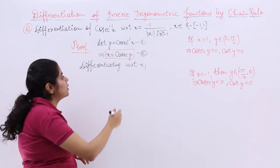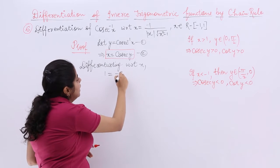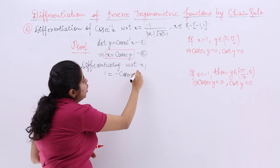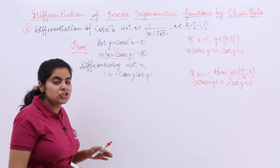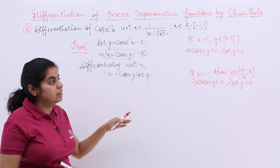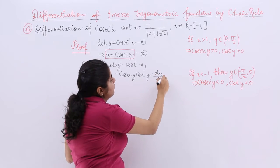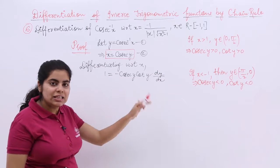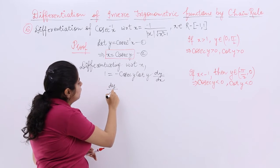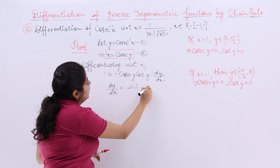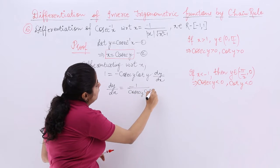Differentiating with respect to x gives 1 on the left side. On the right side, cosecant becomes minus cosecant y cot y, because the differentiation of cosecant theta is minus cosecant theta cot theta. Then y becomes dy/dx. So dy/dx equals minus 1 upon cosecant y cot y.